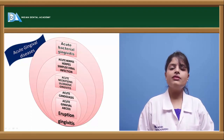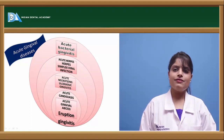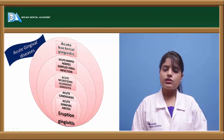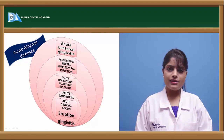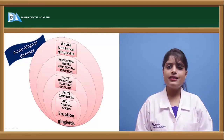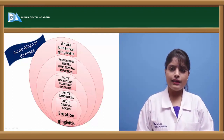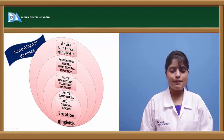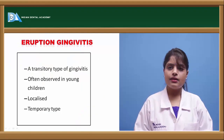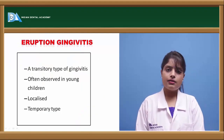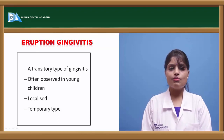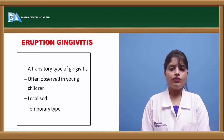Acute gingival diseases in children include acute bacterial gingivitis, acute herpetic stomatitis, acute necrotizing ulcerative gingivitis, acute candidiasis, acute gingival abscess, and eruption gingivitis. Eruption gingivitis is a phase of gingivitis inflammation in children between 6 to 36 months of age, occurring during the eruption of the teeth.